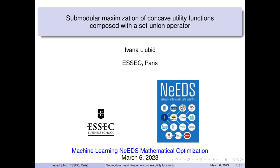Welcome everybody to the online seminar series 'Machine Learning Needs Mathematical Optimization.' Today we have the pleasure of having Ivana Lubic, a full professor in Operations Research at the Essex Business School in France. Prior to that she was at the University of Vienna and has held visiting positions at universities such as University of Maryland, TU Dortmund, and TU Berlin. Her research interests include combinatorial optimization, optimization under uncertainty, and bi-level optimization, with applications in network design, transportation, logistics, routing, and bioinformatics.